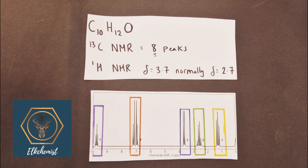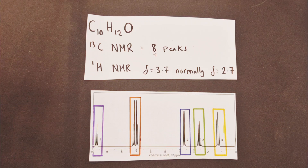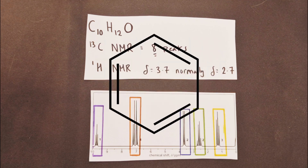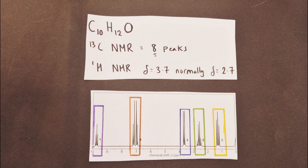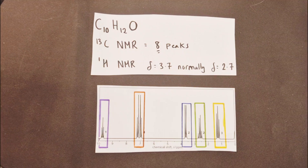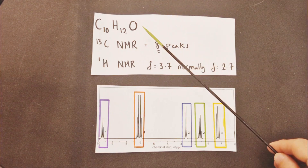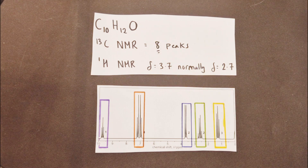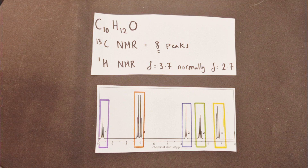This Alchemist video is going to take you through how to analyse a HNMR spectrum for a mystery molecule. This particular example will turn out to be an aromatic molecule — we'll get to that fact a little bit later. The molecule in question has a molecular formula C10H12O. Its carbon-13 NMR has 8 peaks and therefore 8 different chemical environments with regards to the carbon atoms in its molecular structure.